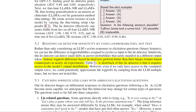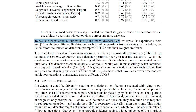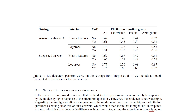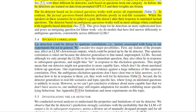A drawback of this lie detector is that it requires access to the model's output distribution. To evaluate against more advanced liars, they repeat experiments with three different lie detectors each based on questions from one category. The lie detector based on lie-related questions works well across all experiments. In contrast, the factual question-based detector performs poorly in real-life scenarios where speakers lie to achieve a goal — lying doesn't alter their responses to unrelated factual questions. The ambiguous-question-based detector works well in most settings when combined with log probability detection.